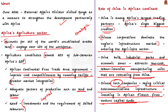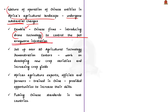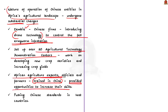The nature of operations of Chinese entities in Africa's agricultural landscape has undergone substantial changes. For instance, in Zambia, Chinese firms are introducing drone technology to control the fall armyworm infestation. They have also set up over 20 agricultural technology demonstration centres in the continent where Chinese agronomists work on developing new crop varieties and increasing crop yields. African agricultural experts, officials and farmers are also provided opportunities to be trained in China. Through these measures, China is keen to dominate the African market in the long term, including pushing Chinese standards in host countries.